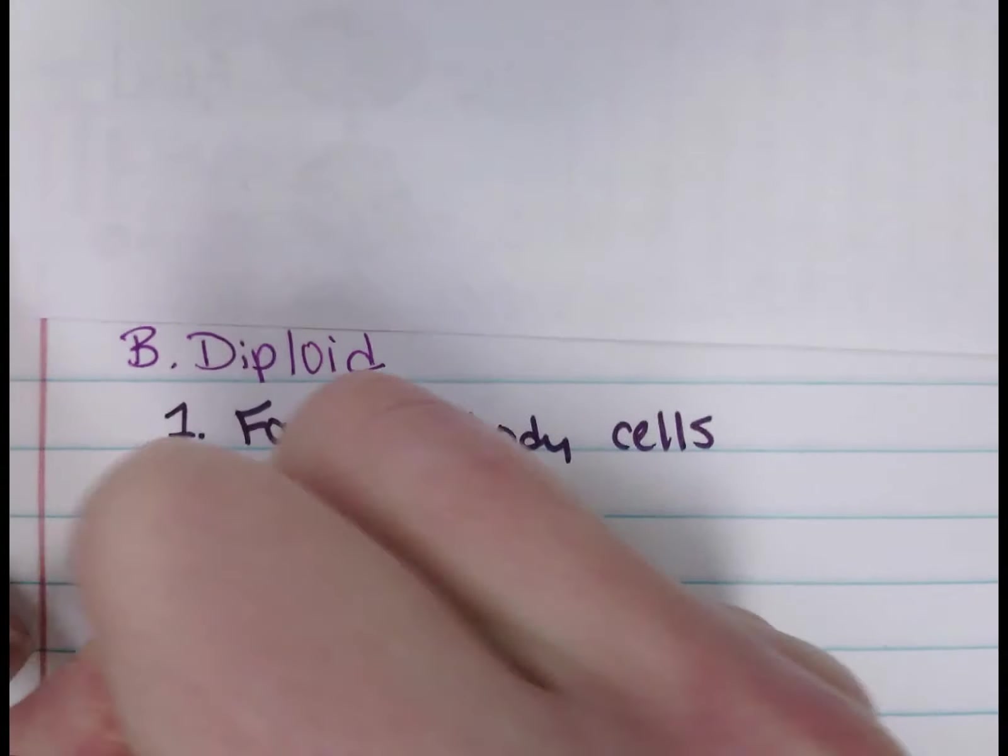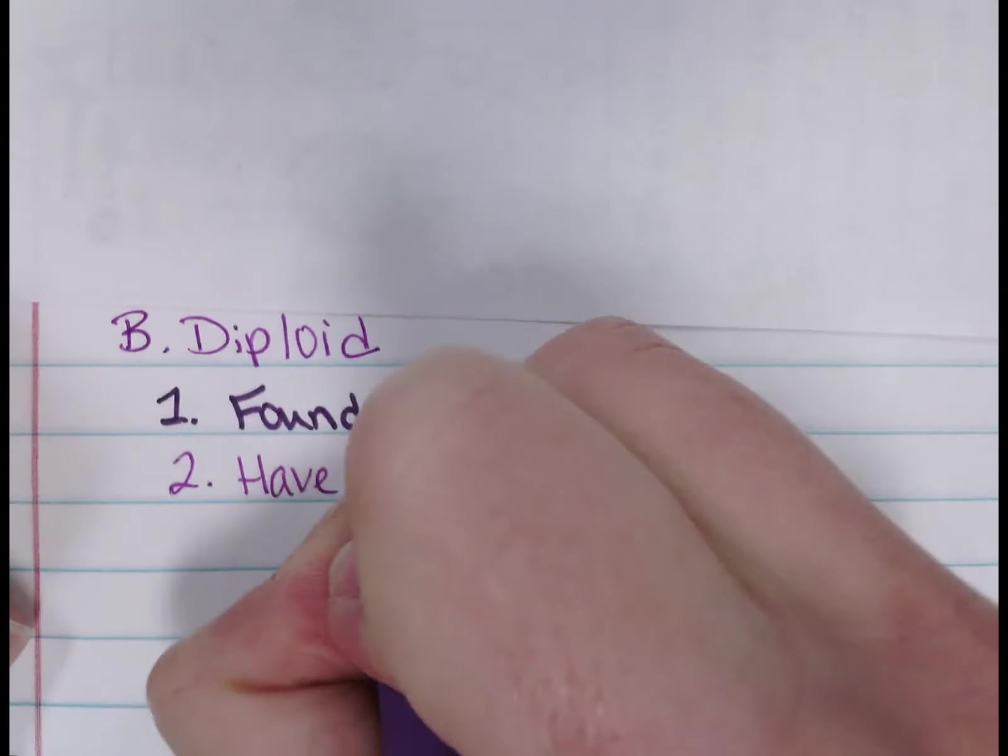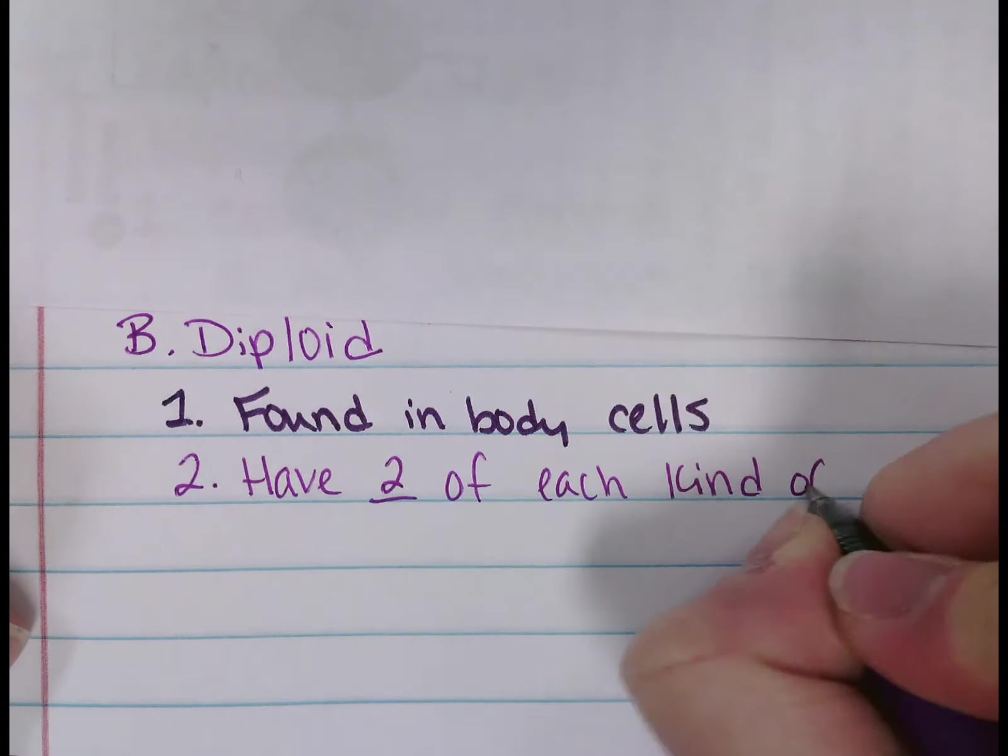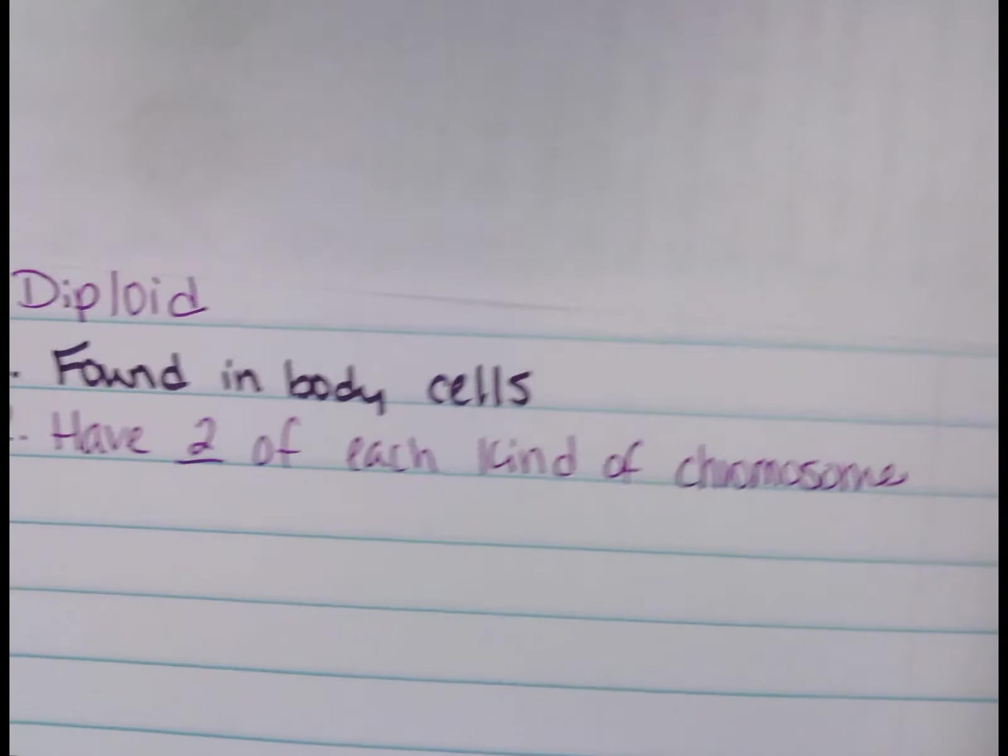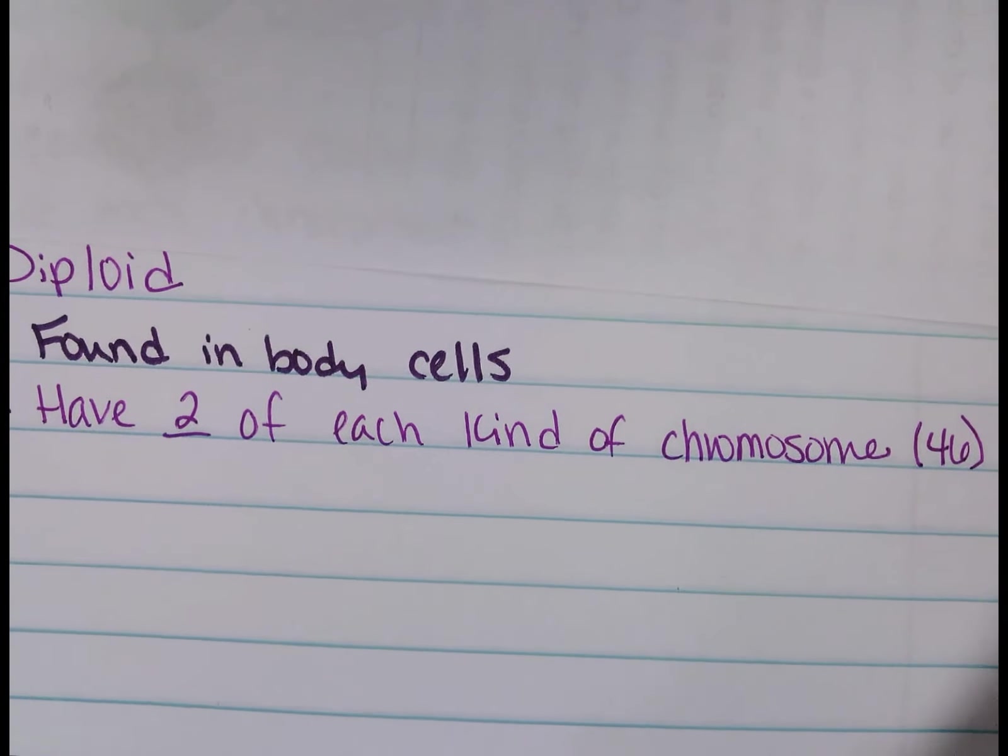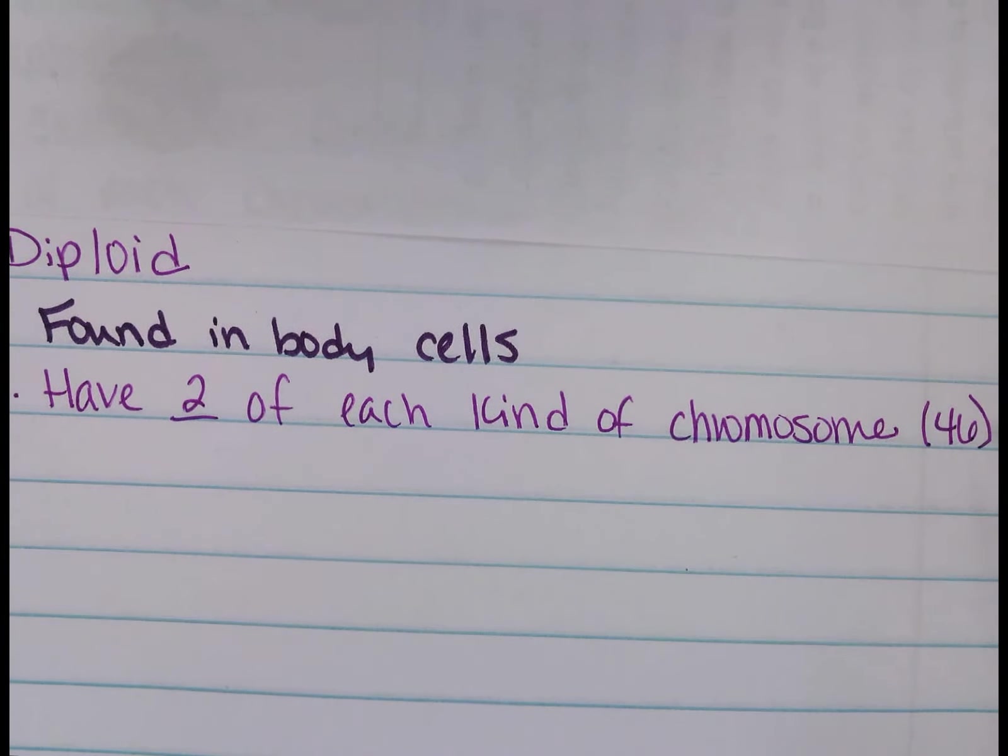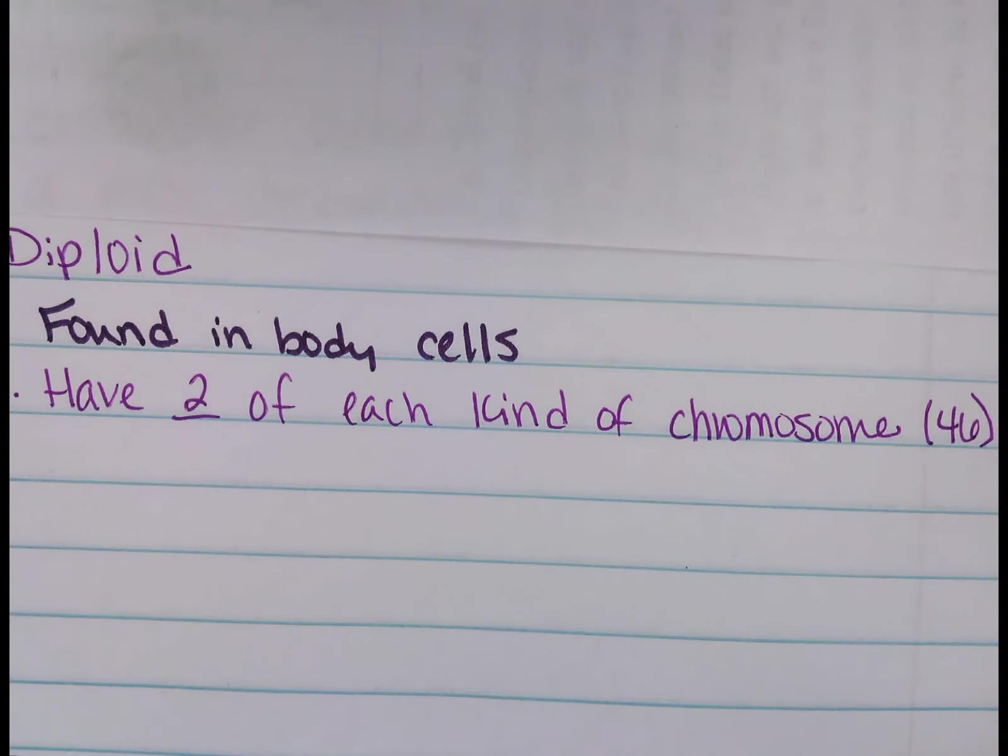And then the second one is going to be they have two of each kind of chromosome. Those of you who can do math, that means there's a total of 46. So diploid—I don't want to say double, because 46 is the number that you were supposed to have. Haploid is half. Diploid is just regular, I suppose. So diploid: found in body cells. Your blood is diploid, everything but your sex cells. So scoot that down.